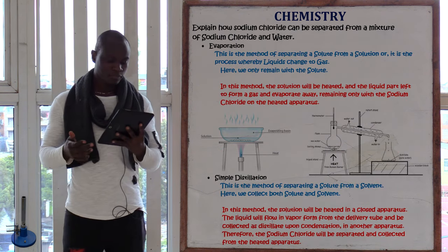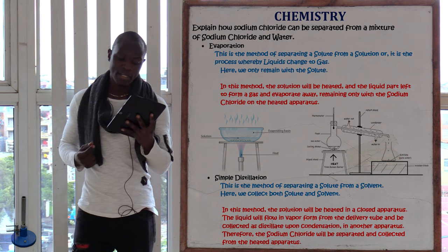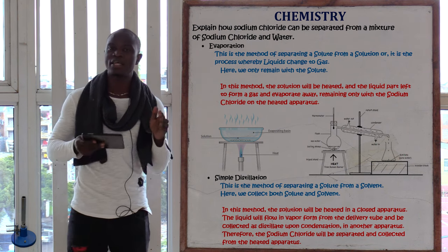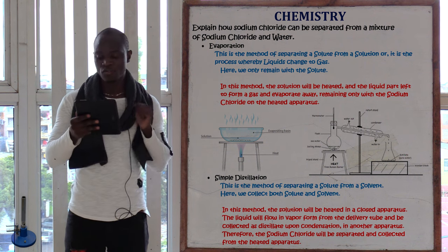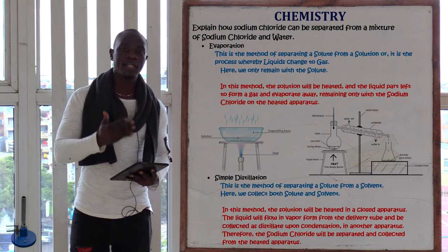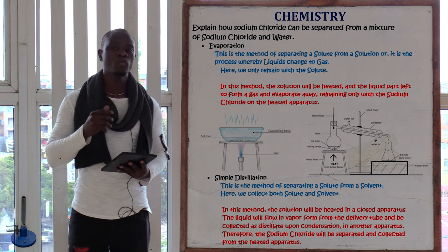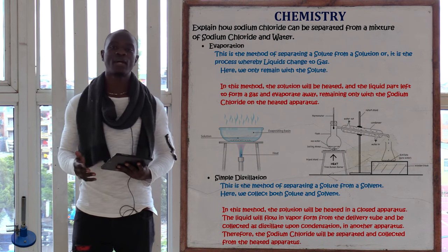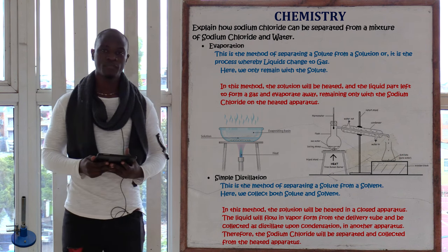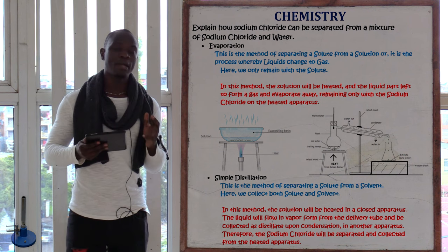The third question asks how sodium chloride can be prepared from a mixture of sodium chloride and water. We can use two methods: simple distillation or the evaporation method. This question is only asking how to remain with sodium chloride — it does not need us to also collect water. We can use evaporation, which is the process whereby liquid changes to gas.